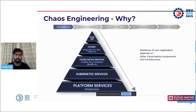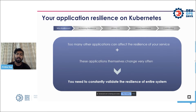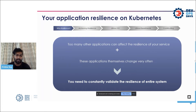Too many applications can affect the resiliency of your service. The world is dynamic — every other day there are more applications coming up, new enhancements in your system, and these applications are changing very often. So the need to constantly validate the resiliency of your entire system comes into play, and that is why chaos engineering is essential.